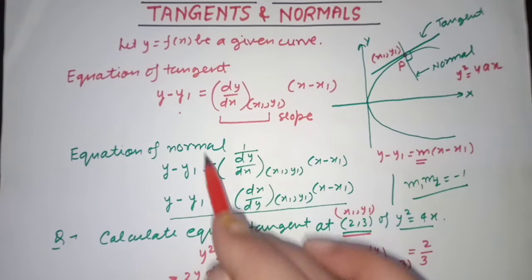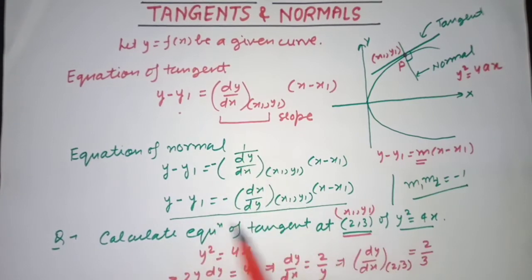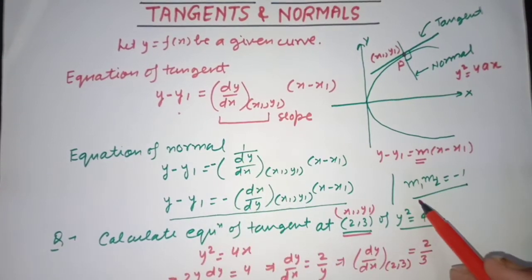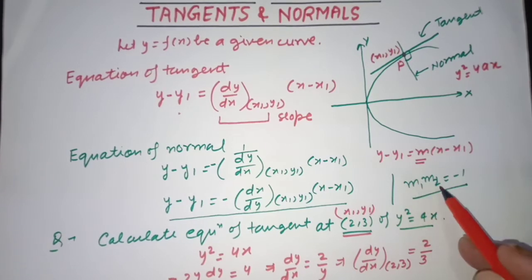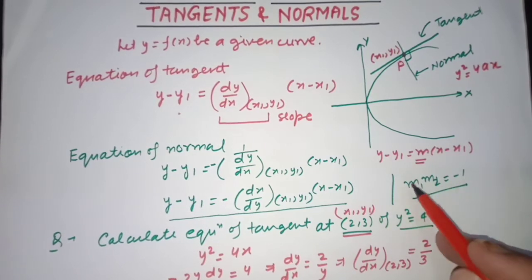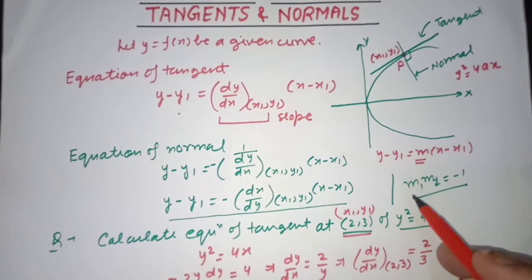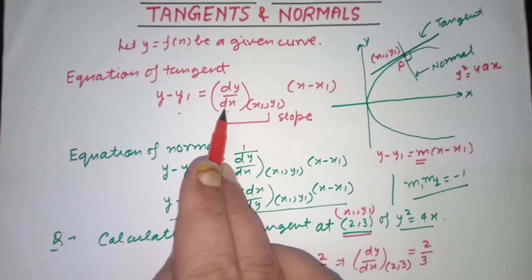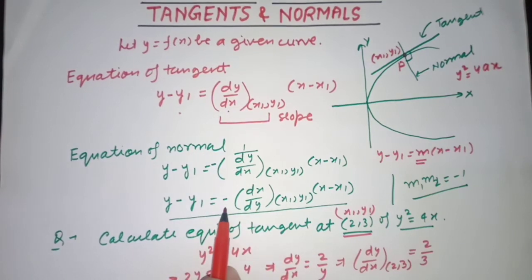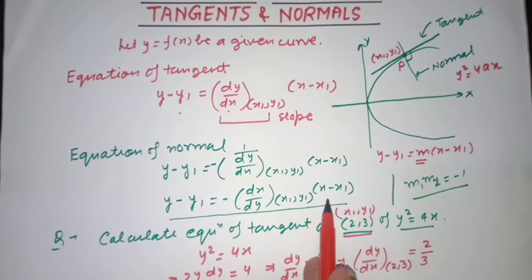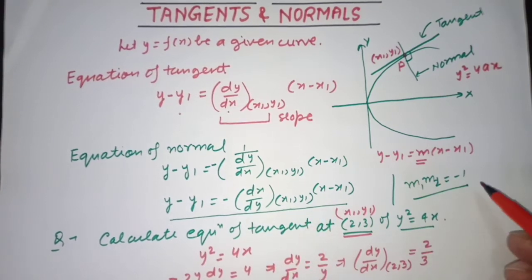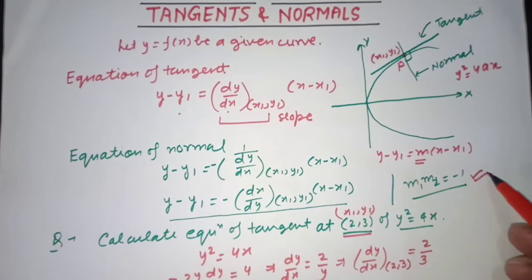Only the slope changes for the normal. This is because we have studied that if two lines are perpendicular, then m1 × m2 = −1. So if the tangent slope is dy/dx, the normal slope becomes negative and reciprocal — that is, −dx/dy at (x1, y1).